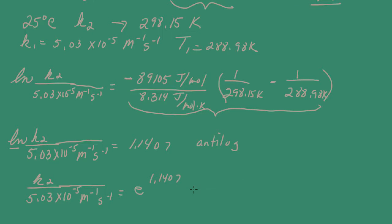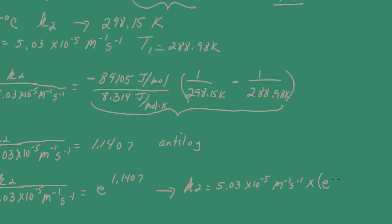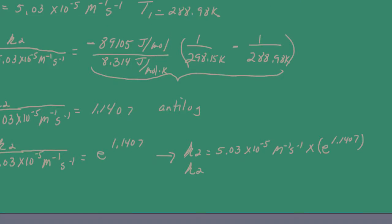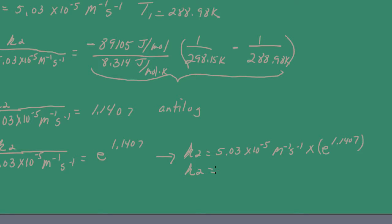K2 is equal to 5.03 times 10 to the negative 5, multiply that by E to the 1.1407 power. And K2 then is equal to 1.57 times 10 to the negative 4 per molar per second.